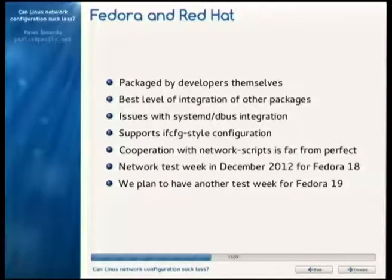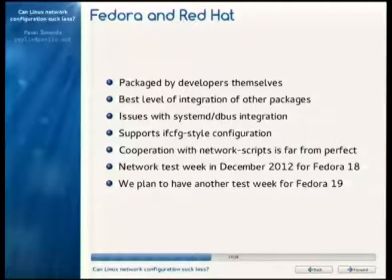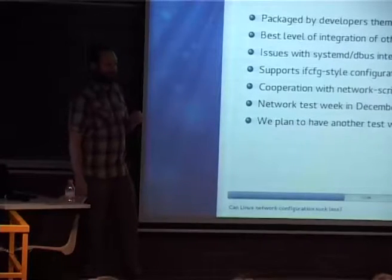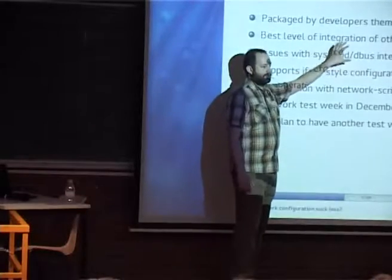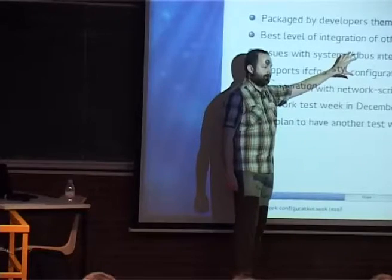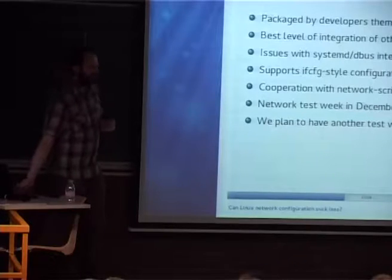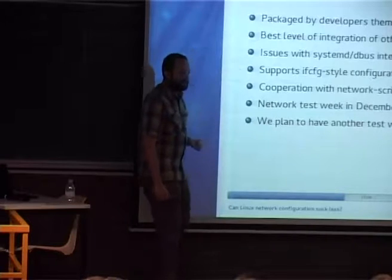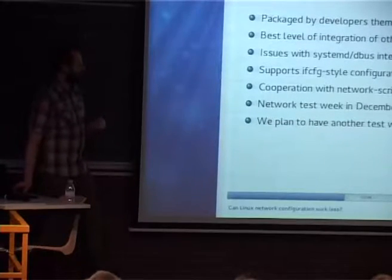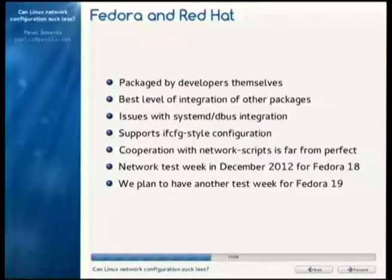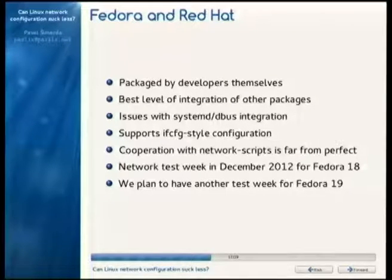We have some issues with systemd and D-Bus. We often get auto-activated via D-Bus — it might happen that you stop NetworkManager to do some testing, and within a few seconds it comes back up, which is very bad. I was trying to get rid of this behavior, and it disappeared in Fedora 17 builds but reappeared in Fedora 18. Currently NetworkManager only identifies devices by their MAC addresses, while network scripts can also do name-based matching.